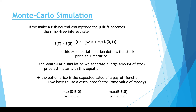To summarize: we use the exponential formula to calculate the stock price at capital T expiry, then we apply a payoff function for call options and put options, and finally a discount factor to calculate the present value. That's all about Monte Carlo simulation for calculating option prices.